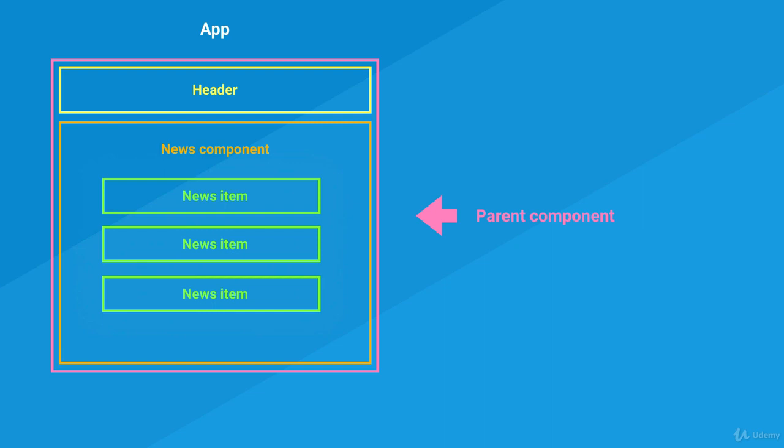To sum everything up, we have four different components: the parent component, the header component, the news component, and the news item — four components total. Why are we talking about this? This is the first thing you need to do whenever you start a new project: stop for five minutes before you start coding and think about your project structure.